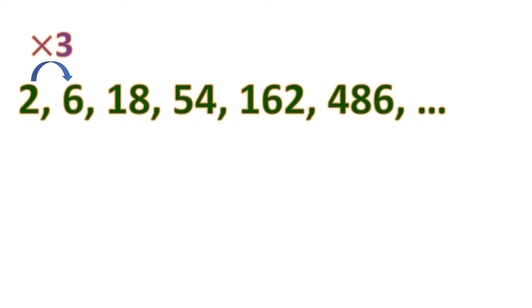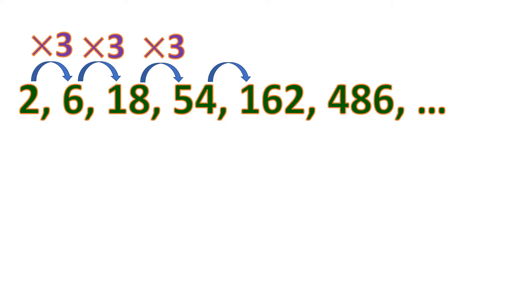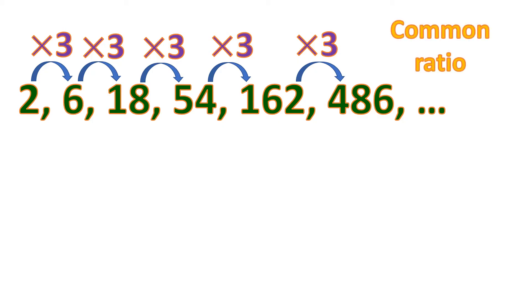To get 6 from 2, you times 3. To get 18 from 6, you times 3. To get 54 from 18, you times 3. To get 162 from 54, you times 3. To get 486 from 162, you times 3. So it is constantly the same procedure — multiplying by 3 to get the next number from the previous number. This is what you call the common ratio.